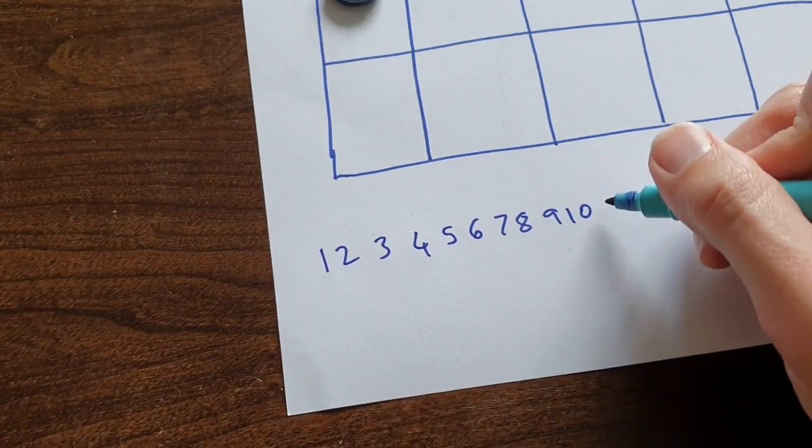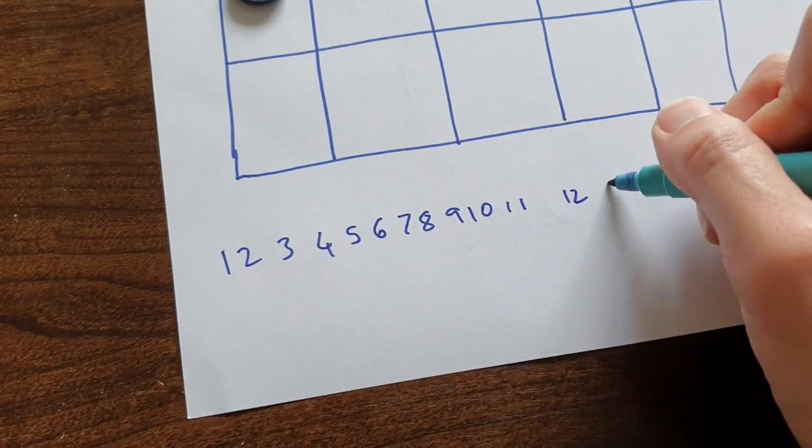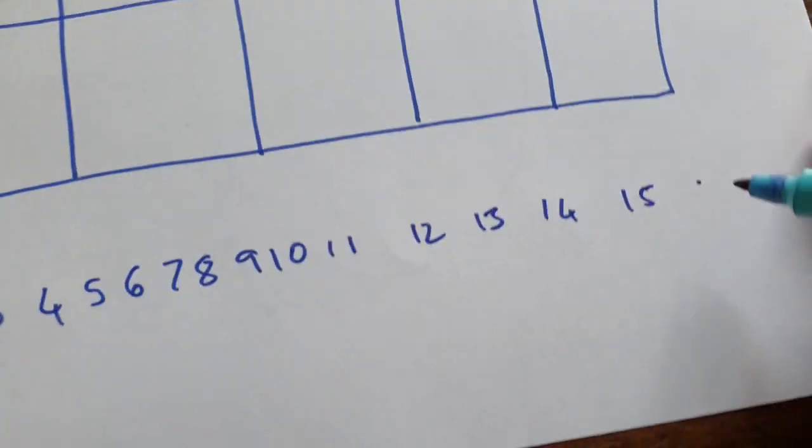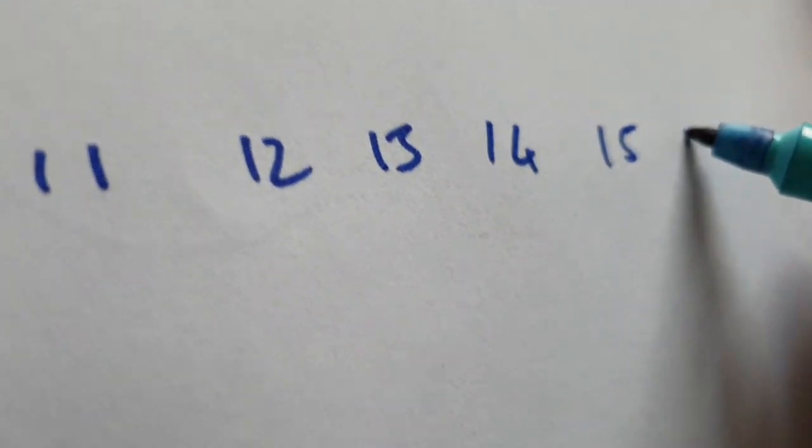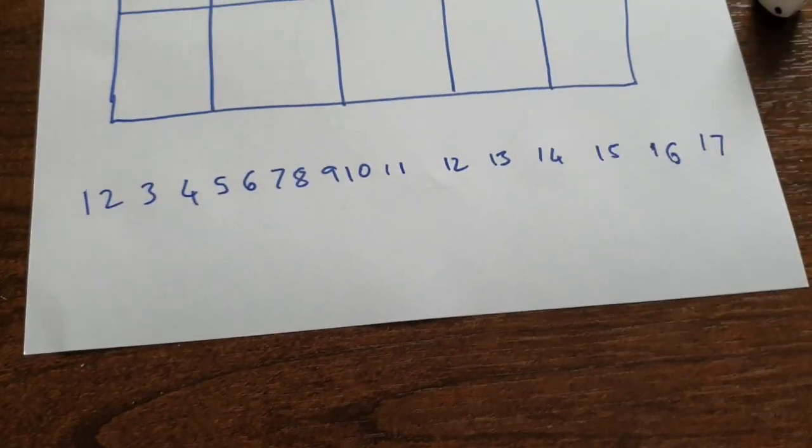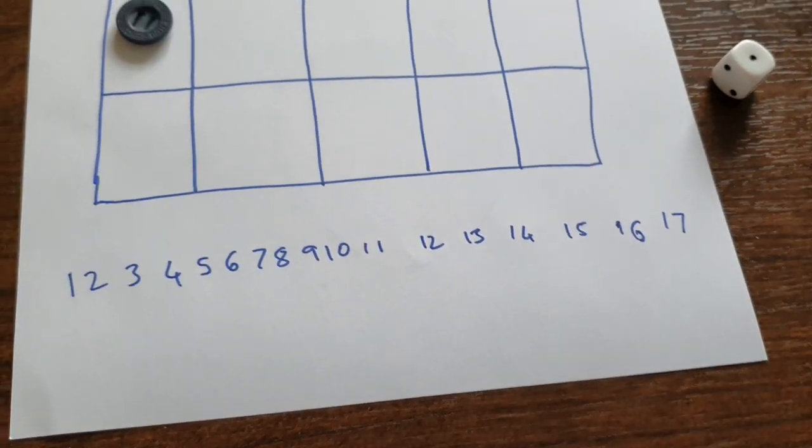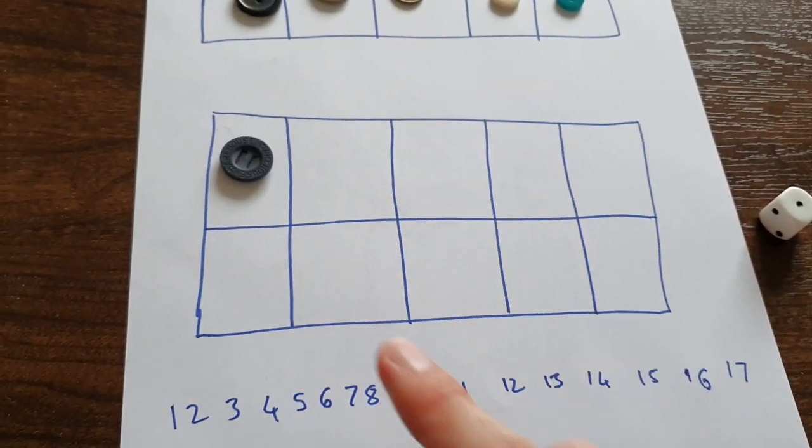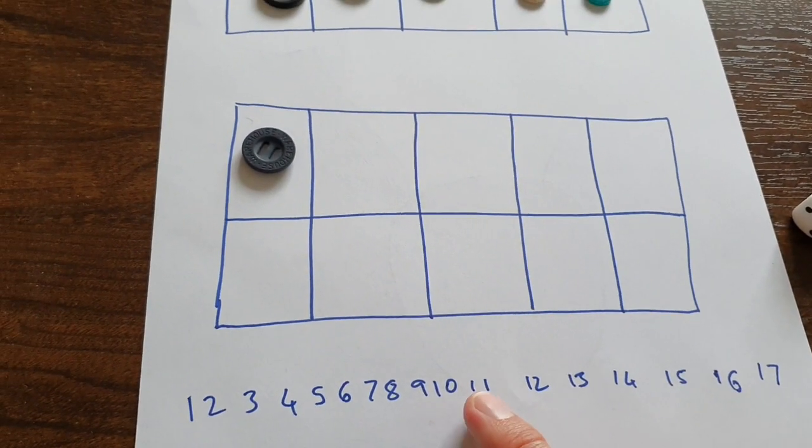Nine ten eleven twelve thirteen fourteen fifteen sixteen. You can use this number track to help you, so if you knew that you were on ten and you had one more, it's eleven I remember now.